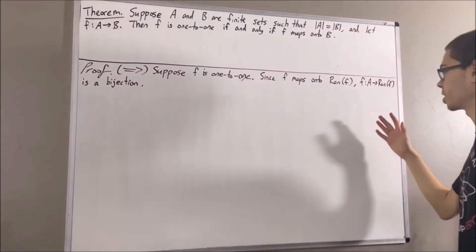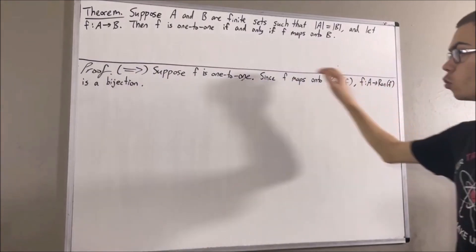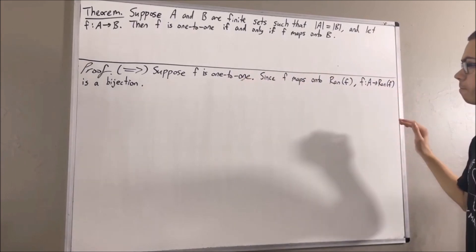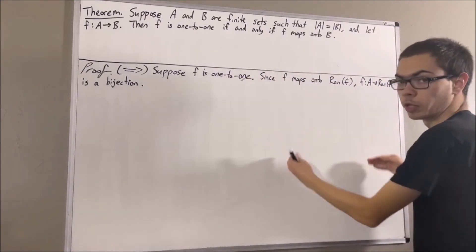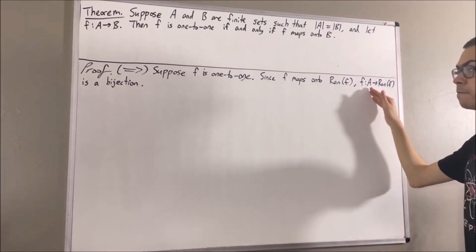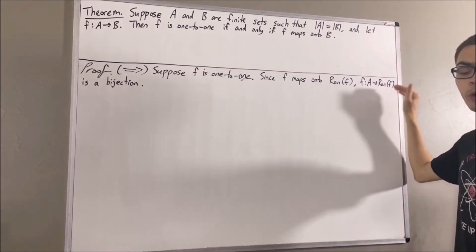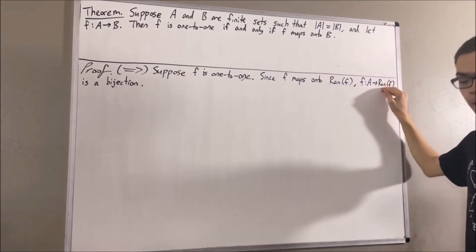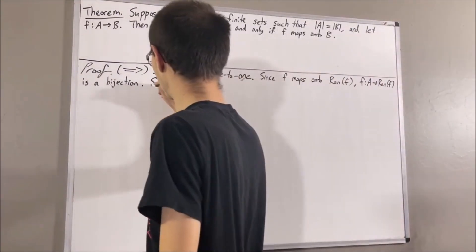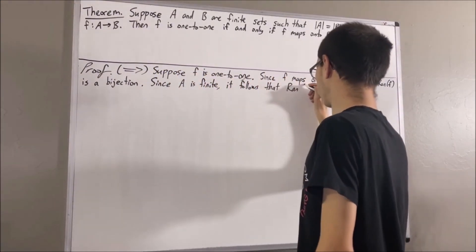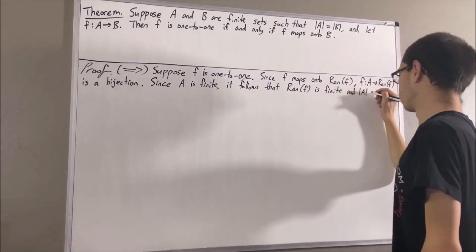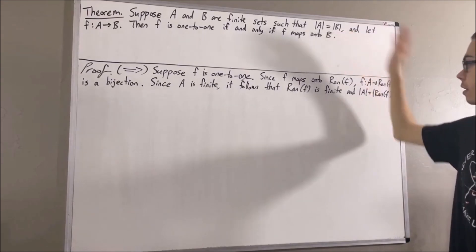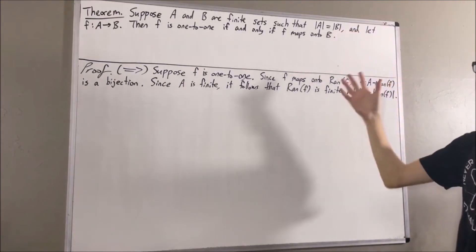The reason why it's a bijection is because we know that F is one-to-one, but we also know that F is onto its range. So we have a bijection between A and the range of F. And since A is finite, this tells us that the range of F must also be finite. In fact, A and the range of F have equal cardinalities. And then since A and B have the same cardinality, this tells us that the range of F and B have the same cardinality.